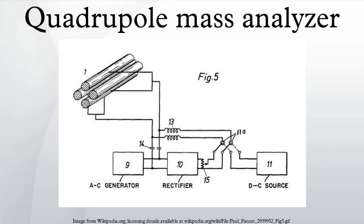Principle of Operation: The quadrupole consists of four parallel metal rods. Each opposing rod pair is connected together electrically, and a radio frequency voltage is applied between one pair of rods and the other. A direct current voltage is then superimposed on the RF voltage.